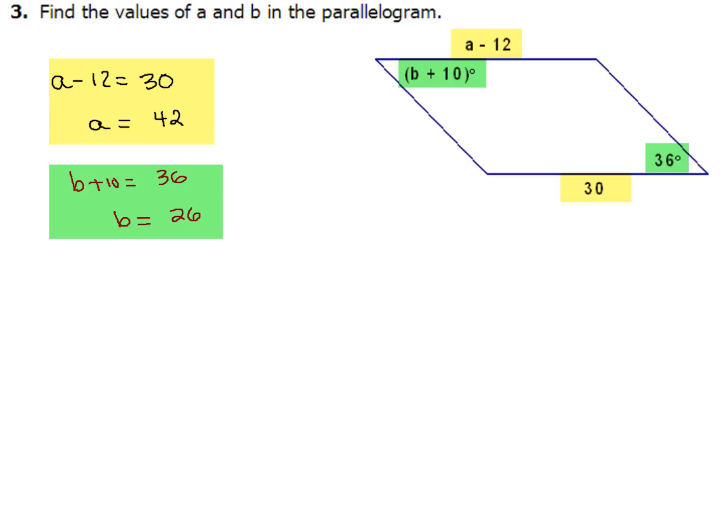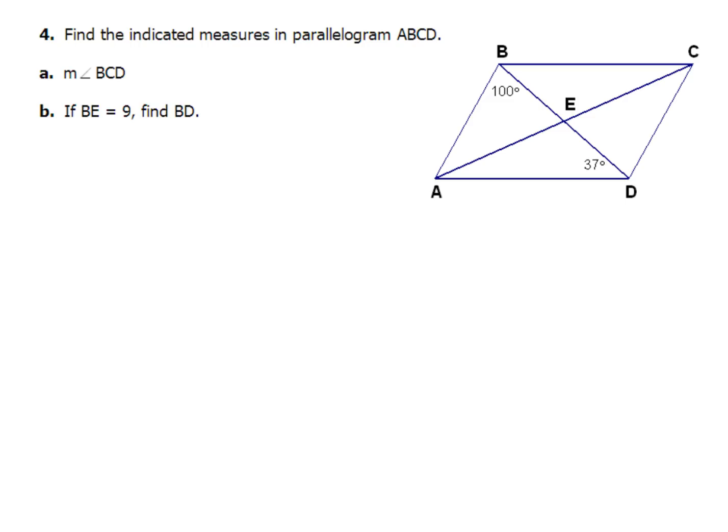Now let's take a look at our next example, example number four. We've got to find the indicated measures of parallelogram ABCD. First example in A, we've got to find measure BCD. So BCD is this angle right up in here. We've got to figure out how much all of that is. Now there's a couple different ways you can do this. Here's one of them. I can start down here with this angle of 37 degrees. Now because two parallel lines cut by a transversal, I've got alternate interior angles are congruent, that means this angle 37 is going to be the same thing as this guy up here. So this entire angle now, I know that angle is 137.